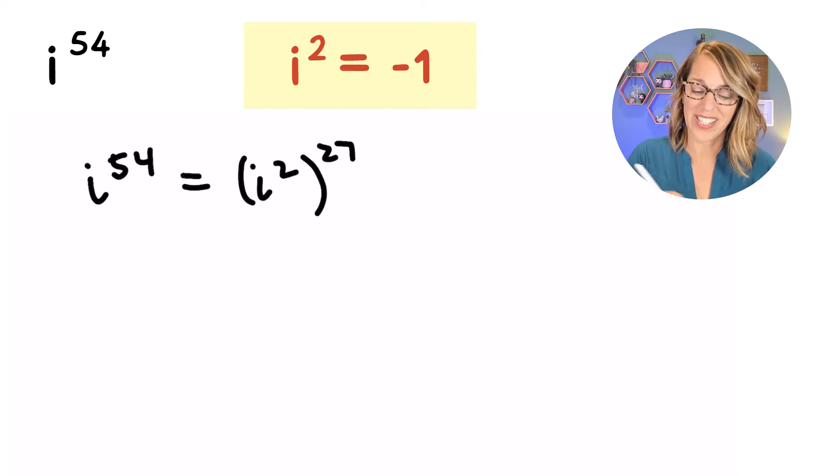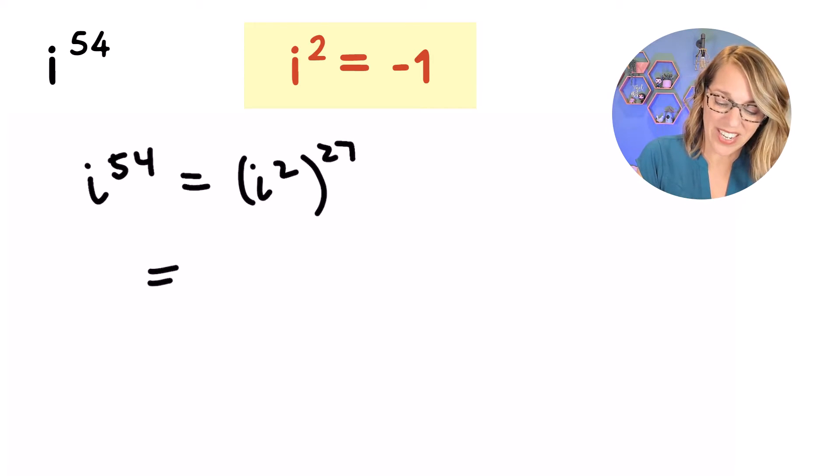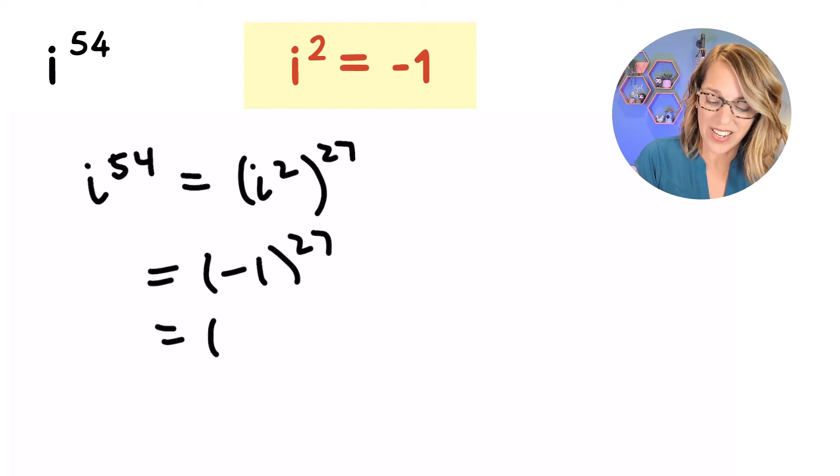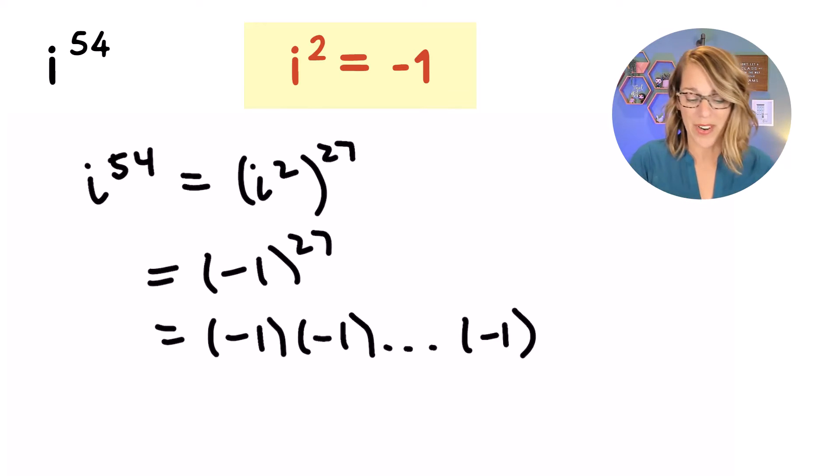So I get a 27 on the outside. Now I can replace that i squared with negative 1. But this time I've got negative 1 an odd number of times. Because that 27 is an odd power, my answer here is negative 1.